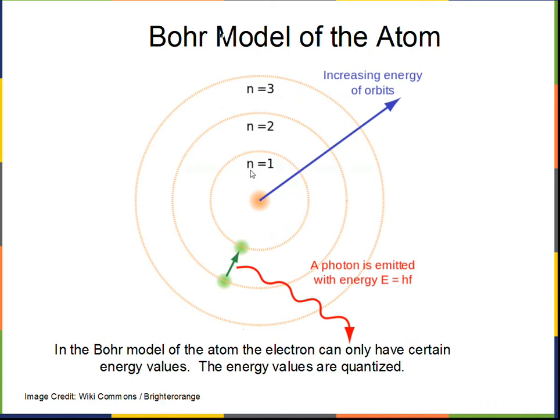We have what we'll call in the future principal quantum numbers: the first orbit n equals 1, then n equals 2, then n equals 3. As we move away from the nucleus, the energy becomes more positive. The energy of any one of these orbits is negative, and that's expected—these are bound orbits.